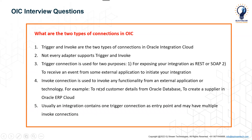The next question is: what are the two types of connections in OIC? There are two types: trigger and invoke. Not every adapter supports both — it depends on the adapter. A trigger connection is used either to expose an integration as a REST or SOAP service, or to receive an event from an external application to initiate your integration. An invoke connection is used to invoke functionality from an external application or technology — for example, reading customer details from a database or creating a supplier in Oracle ERP Cloud. Usually an integration contains one trigger connection as the entry point and one or multiple invoke connections.